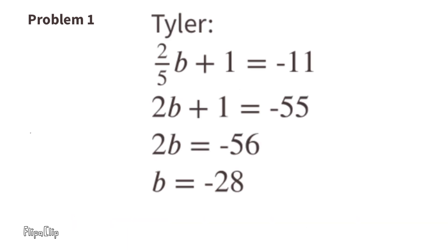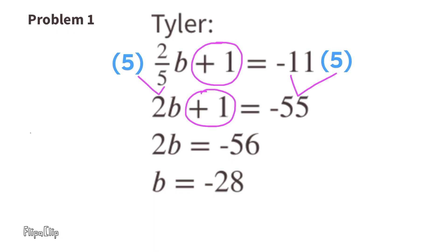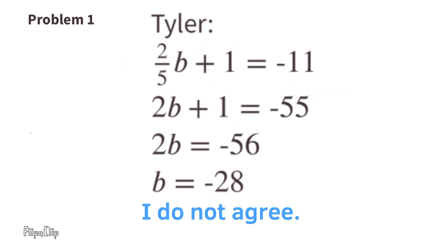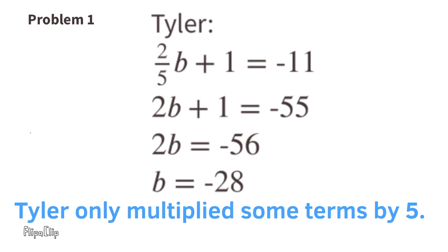Let's take a look at what Tyler did. Tyler multiplied 2/5 B by 5 and he multiplied negative 11 by 5, but Tyler didn't multiply the 1 times 5, making the equation out of balance. I don't agree with Tyler either — Tyler only multiplied some of the terms by 5.